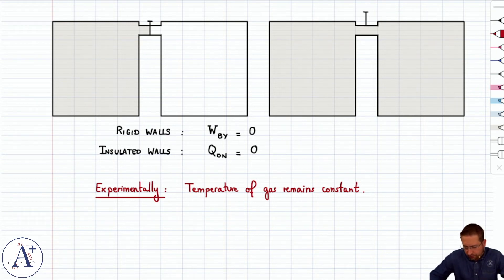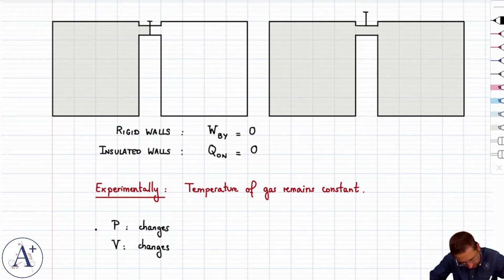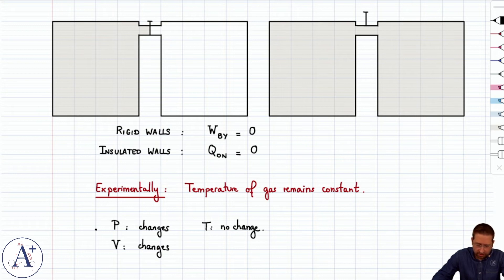Because if we now take a look at what changes, pressure changes? Yes. Pressure changes. Does volume change? Yes, for sure volume changes. T, temperature, no change. So the only state variable that does not change is temperature.